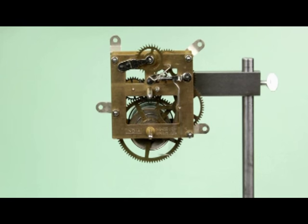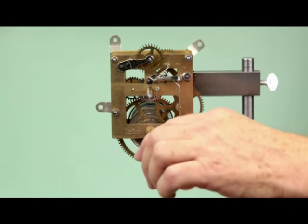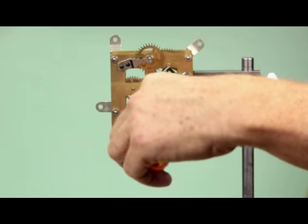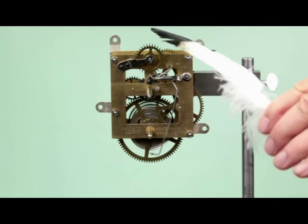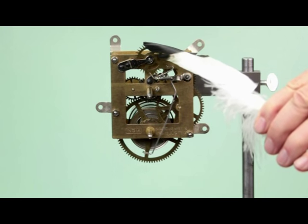If you want a practical demonstration of the loss of torque through the wheel train, take the winding key and feel the force of the spring or weight as you wind the clock. Now touch the escape wheel. You can stop it with a feather.